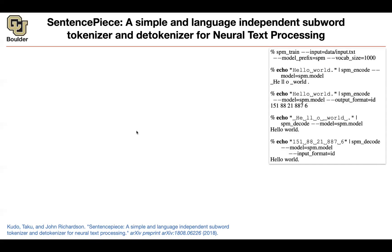You can download or install the SentencePiece package on your computer and then use the following commands. The first one is spm_train. You tell it what your training corpus is — you put a very large text file, which could be all the sentences from every document in Wikipedia. The algorithm can also take multiple files as a comma-separated list. The text is formatted as one sentence per line — that's all the pre-processing you need.